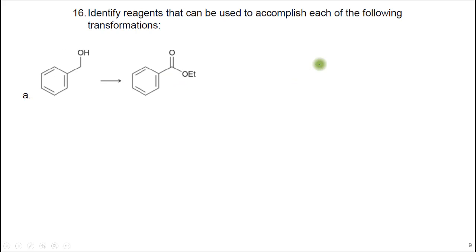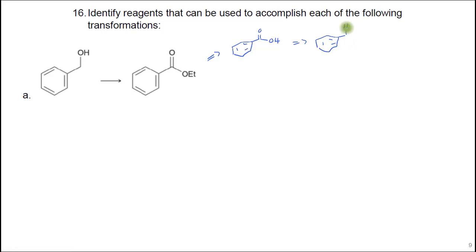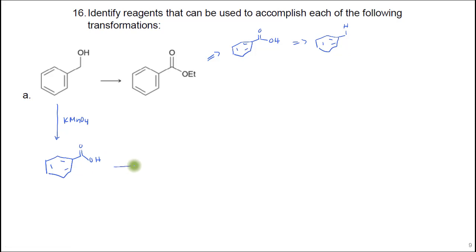Here we are trying to make an ester from an alcohol. Remember, we can make an ester from a carboxylic acid, and we can make a carboxylic acid from the alcohol. So we need to oxidize this — use KMnO4. We don't want to use PCC because that will stop at the aldehyde; KMnO4 will go all the way to the carboxylic acid. Then we use the Fischer esterification: ethanol in the presence of acid will get us to that ester.